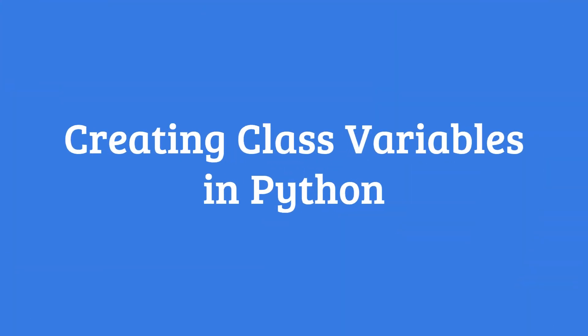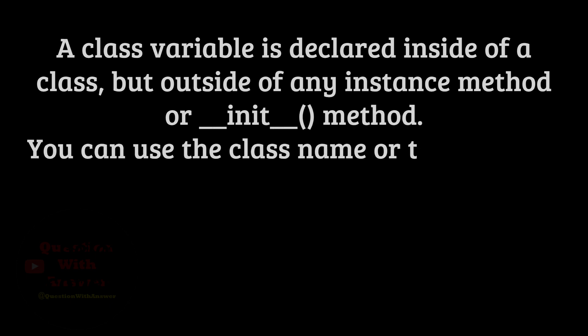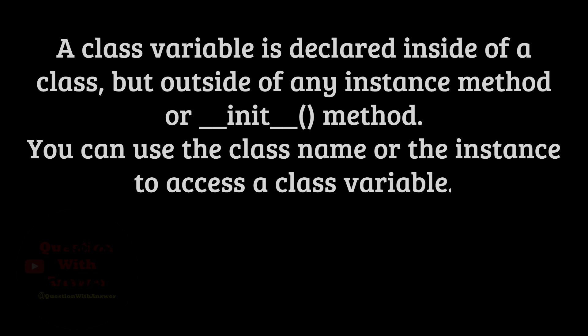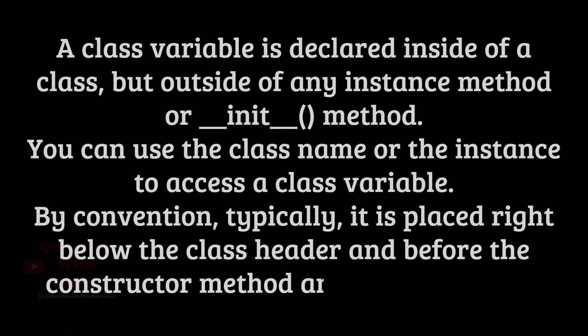Creating class variables in Python. A class variable is declared inside of a class, but outside of any instance method or __init__ method. You can use the class name or the instance to access a class variable. By convention, typically, it is placed right below the class header and before the constructor method and other methods.